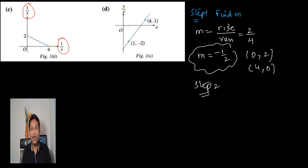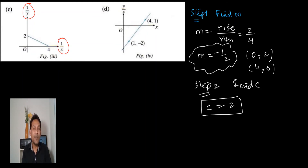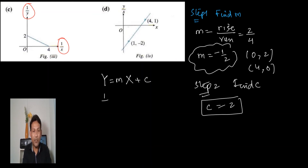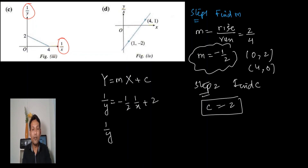C is coming 2 from the graph. Now write capital Y equals m times capital X plus c. Capital Y is 1/y, so write 1/y. The gradient is minus 1/2. Capital X is 1/x. Plus c is 2. So: 1/y equals minus 1/(2x) plus 2.